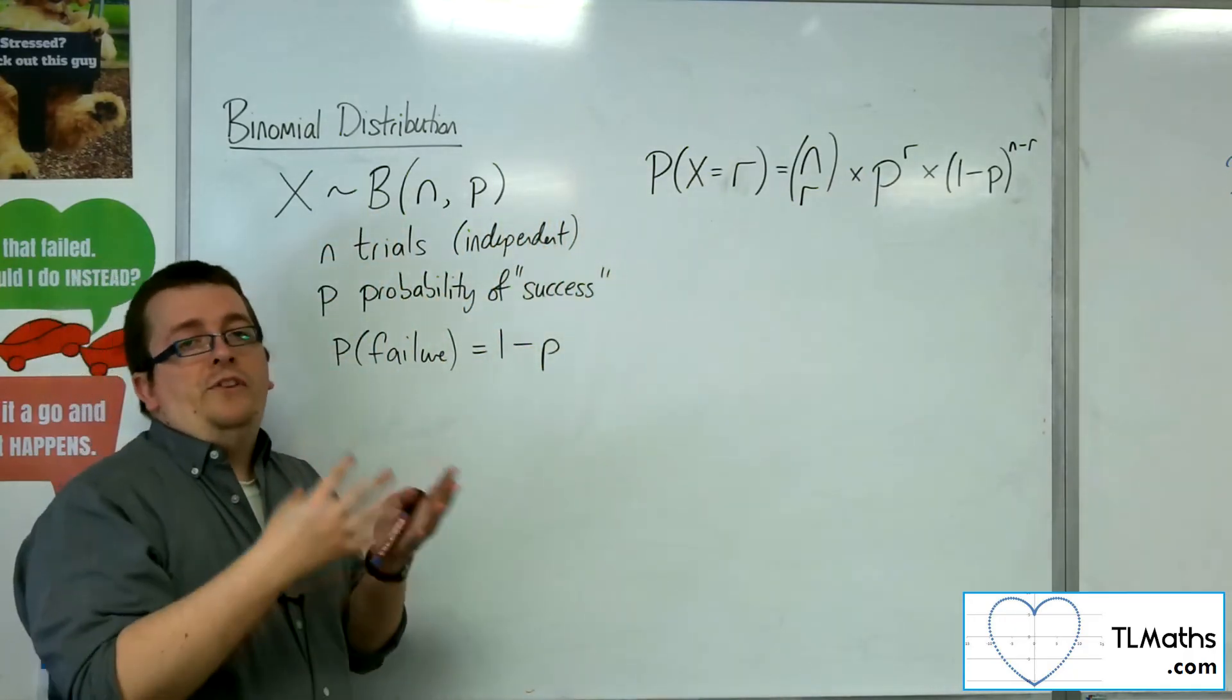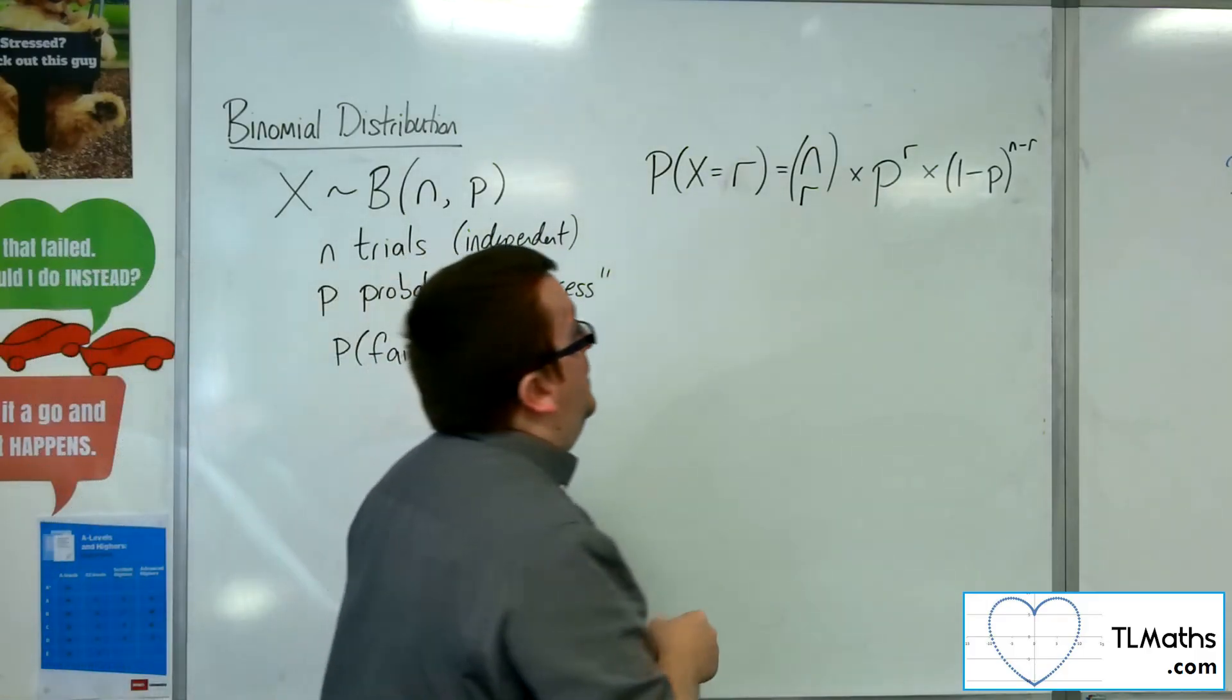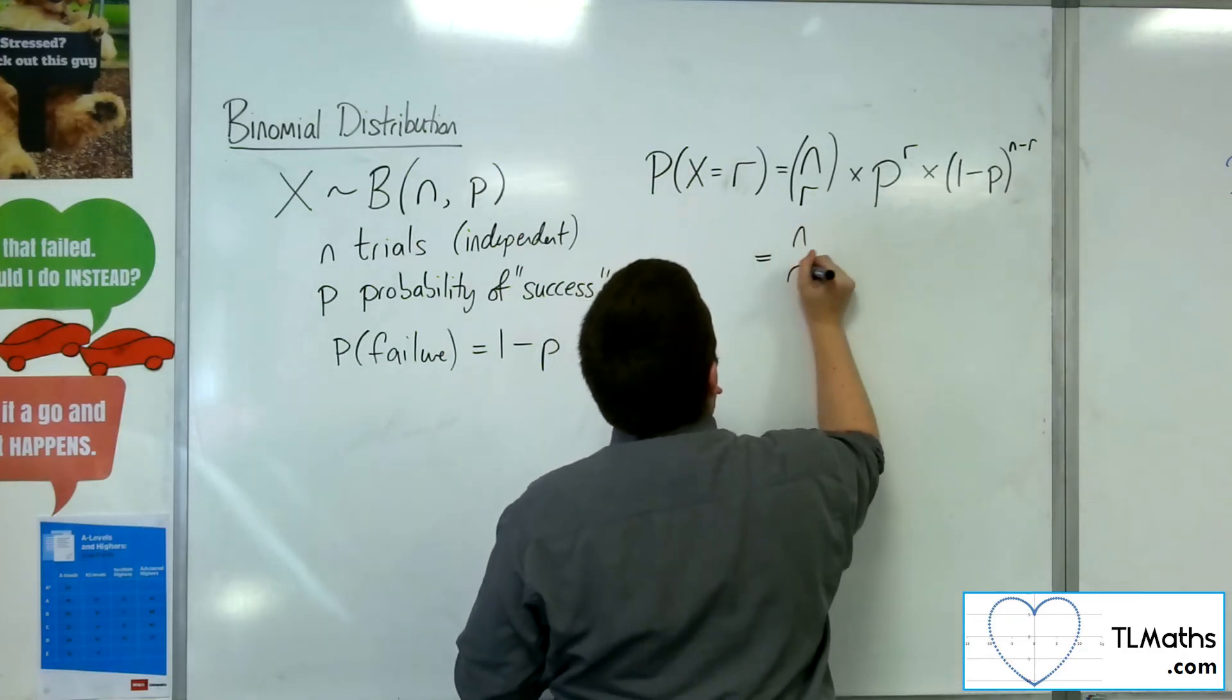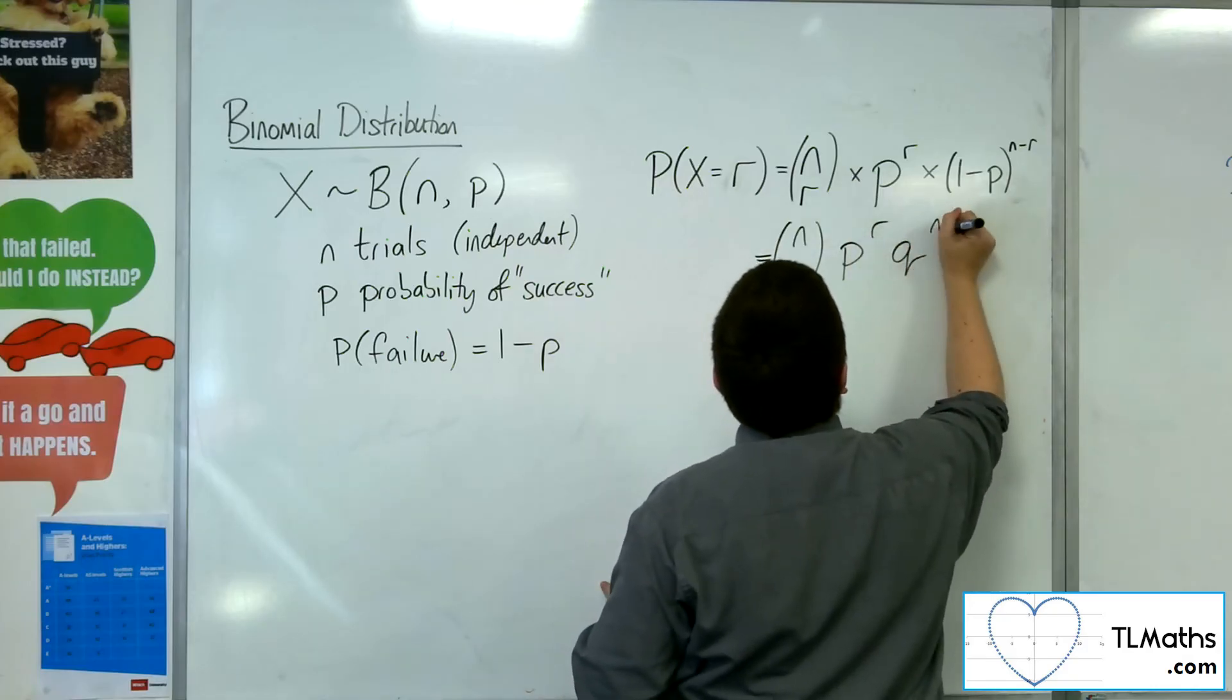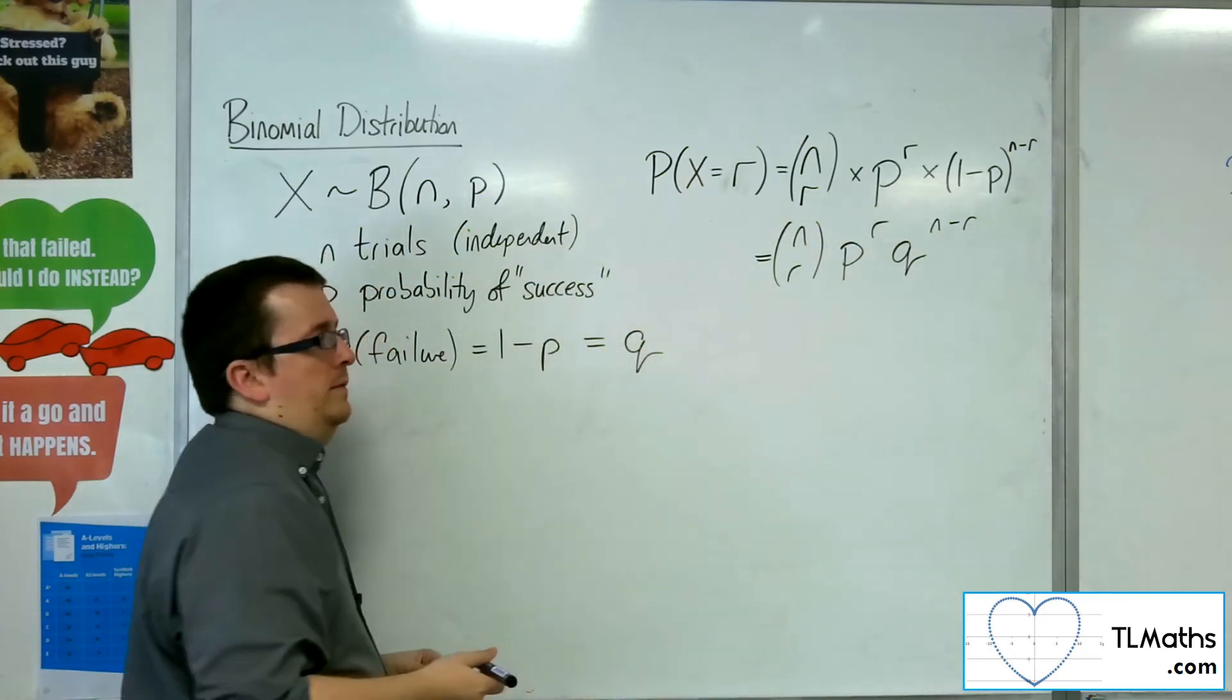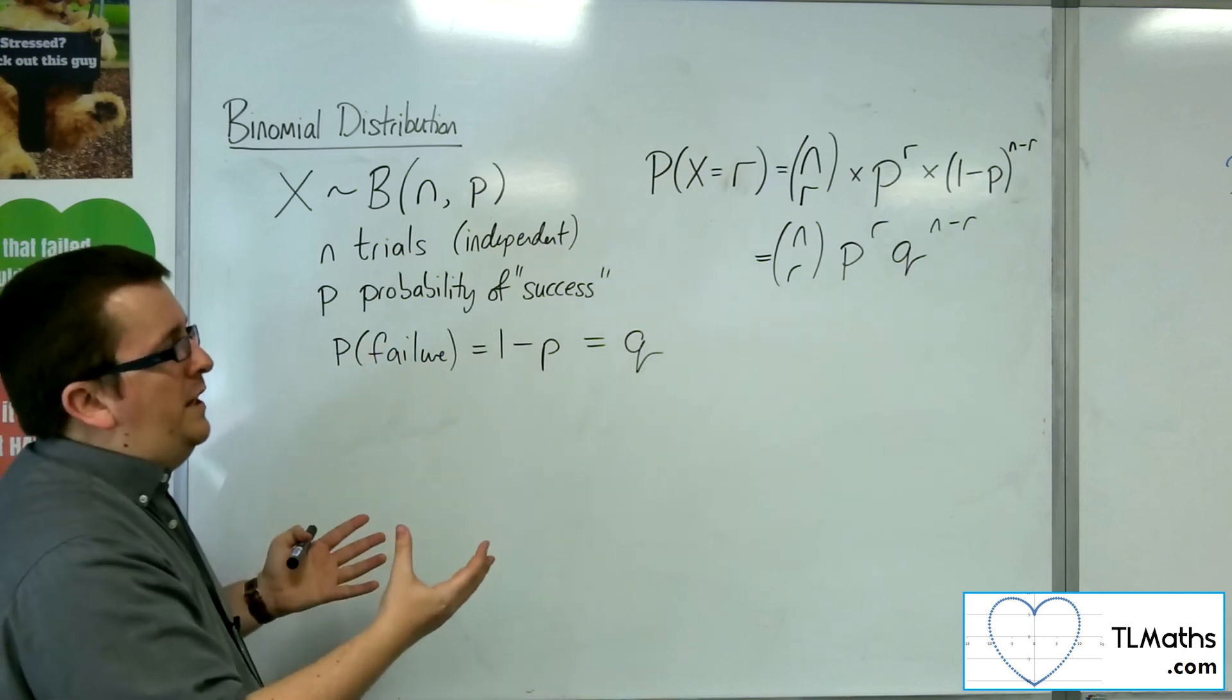You may also see this written as Q. So Q is 1 minus p there. So that is what we're going to be using.